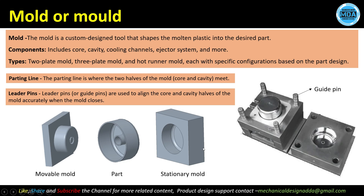The mold has two parts: a stationary mold — the cavity side — and a movable mold — the core side. When combined, they create the inside cavity where the part is formed. The required parts should have a good amount of draft so that they can be easily ejected from the mold.